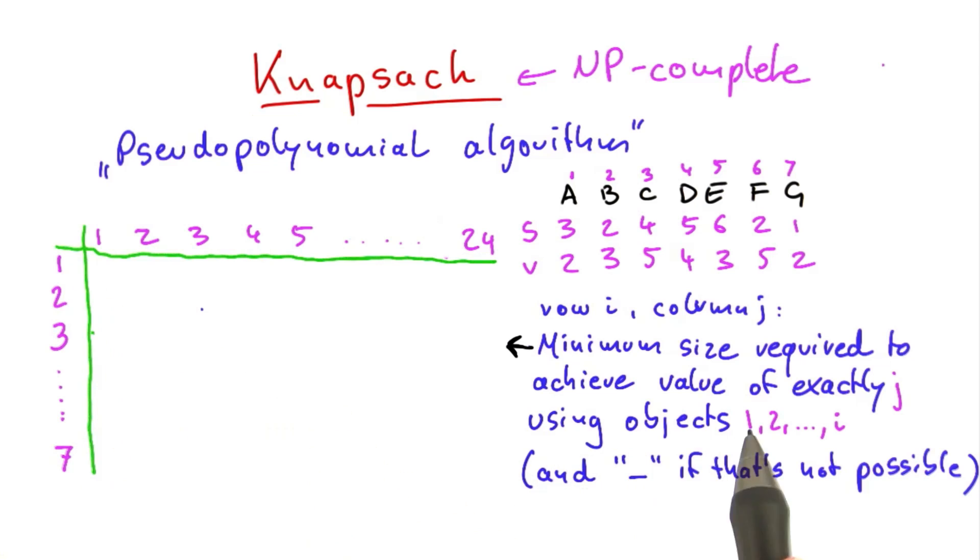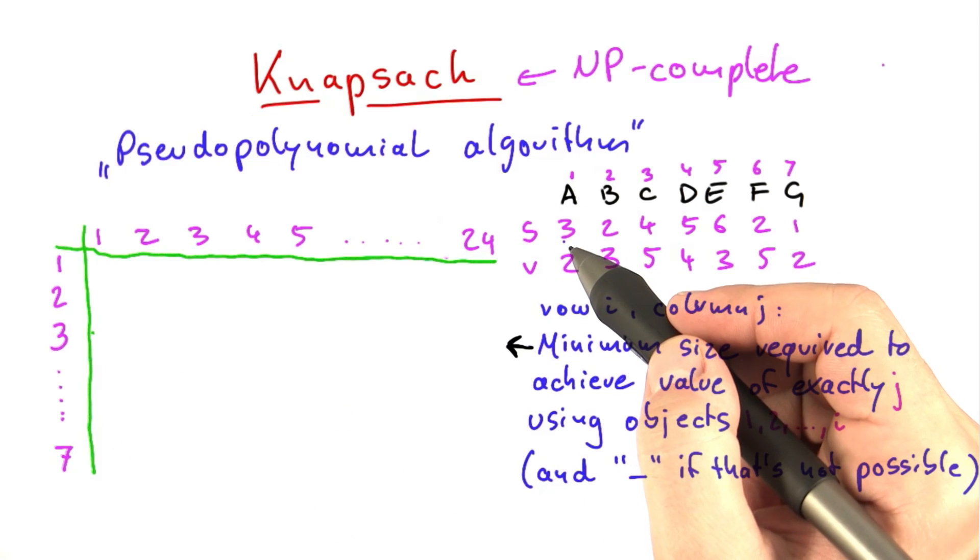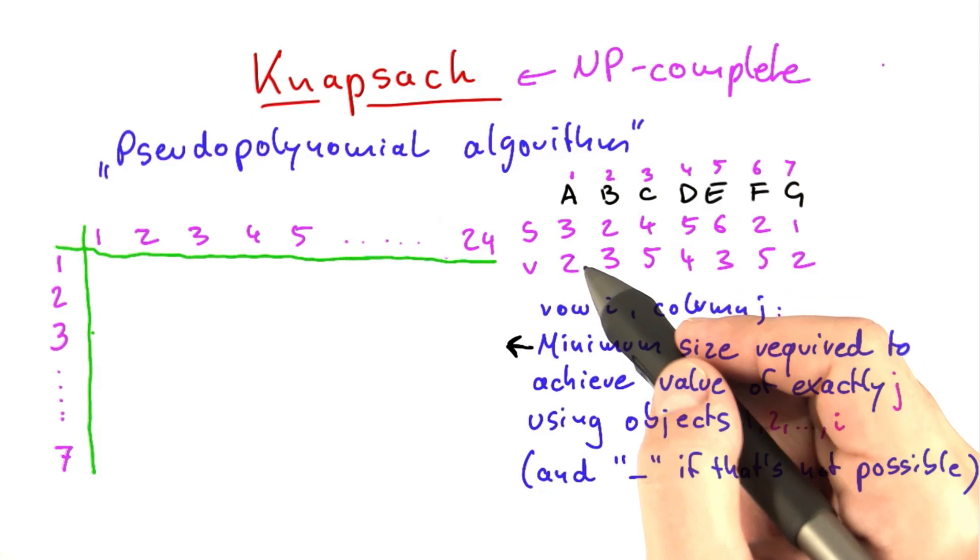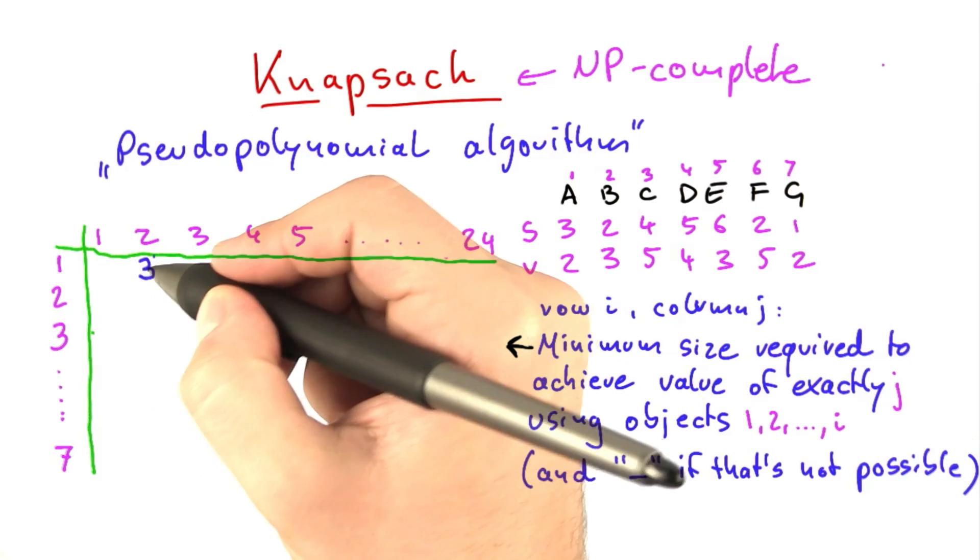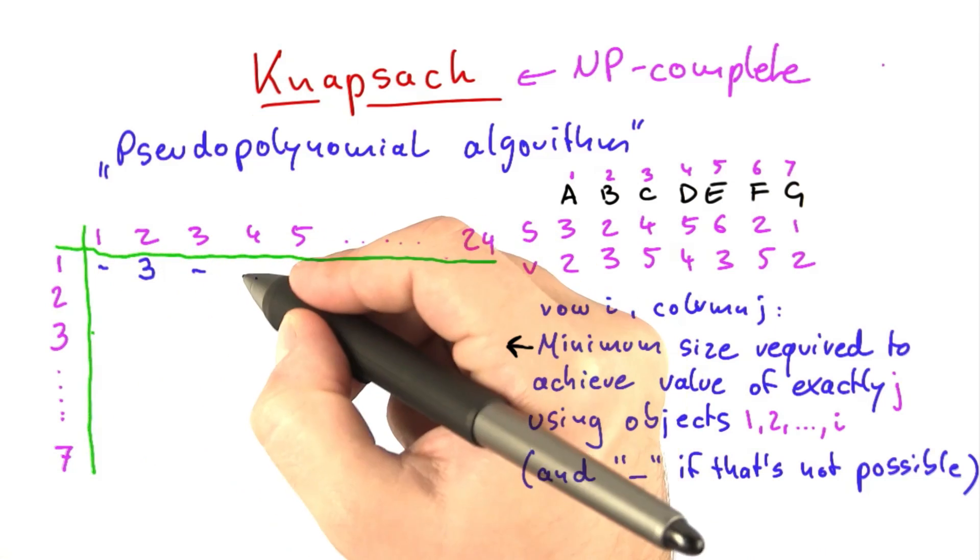Now in the first row, we only have the first object available. So the only thing that we can achieve is a value of 2 using size 3. So value of 2 using size 3. And all of the other ones are just not possible.